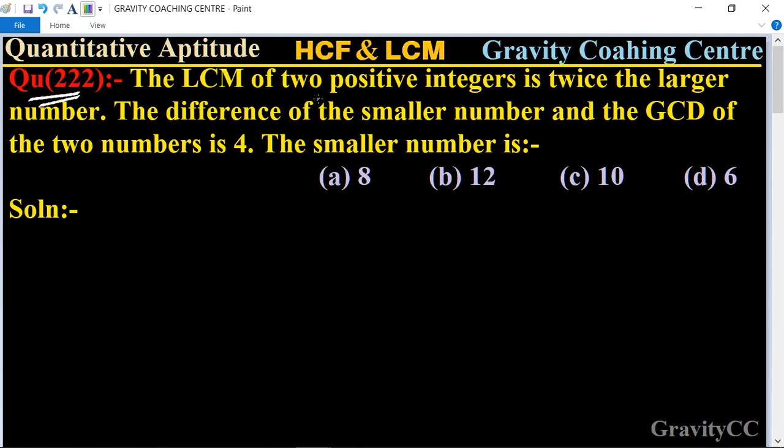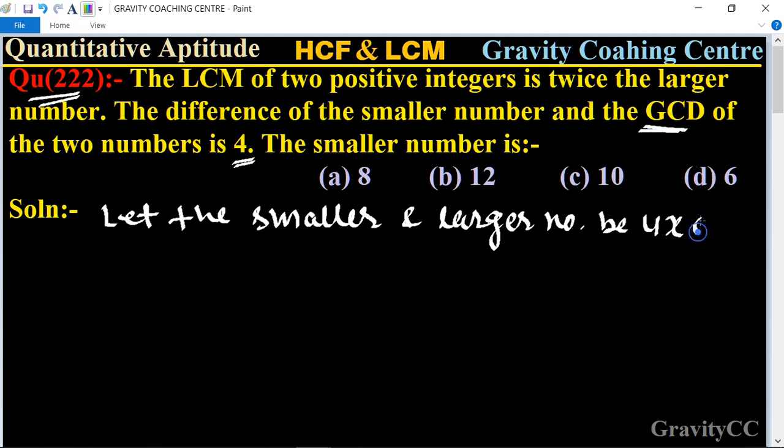In this question, first of all we let the two numbers be, and here GCD means its HCF is a given 4. So let the smaller and larger number be 4x and 4y, where x and y are coprime.